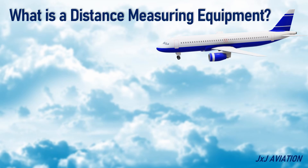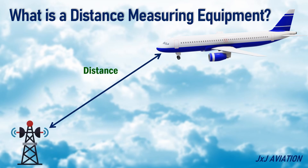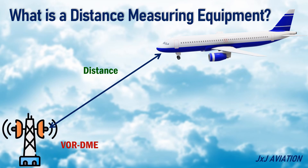First, let's understand what is a distance measuring equipment. A distance measuring equipment is a navigation beacon which allows an aircraft to measure its distance from that beacon. Usually, the DME is coupled with a VOR ground station. This will provide both distance and bearing information of the aircraft from the beacon.